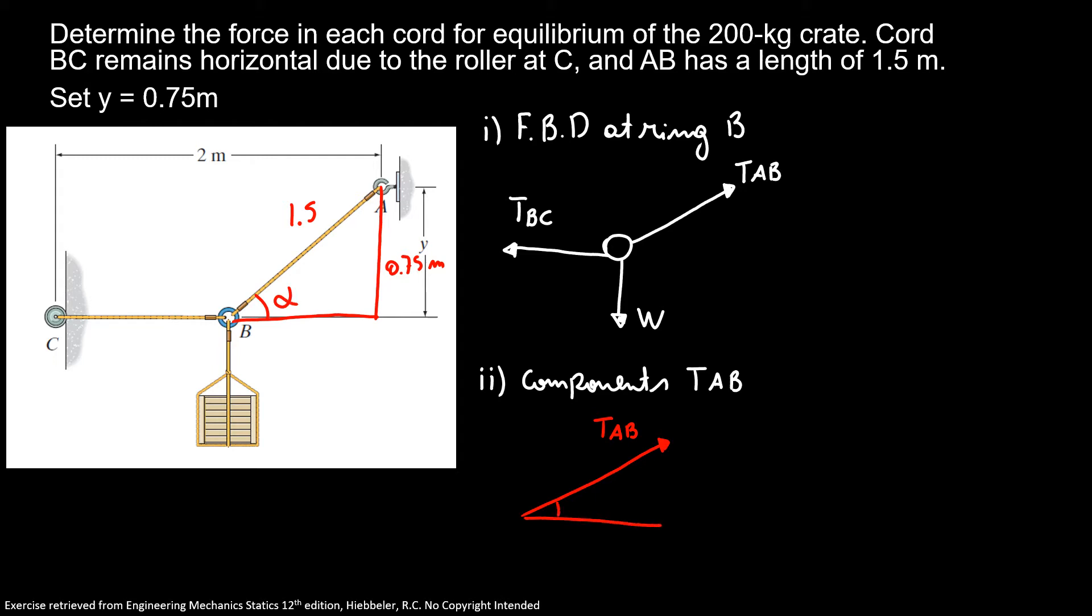So here is also my alpha. Here is my component tension AB_x, and here is my tension AB_y. I can discover my alpha saying sine of alpha is equal to 0.75 over 1.5. So I know my sine of alpha equals 0.5. So I know my alpha is 30 degrees. And here I know my cosine of alpha is 0.866 using my calculator.